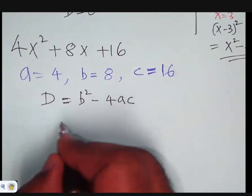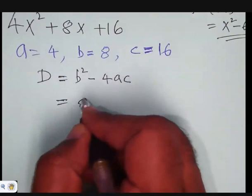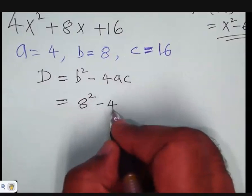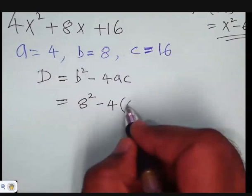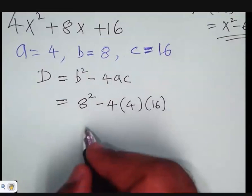Substitute your b, which is 8. So 8². Then minus 4 times a, that is 4, and c is 16. So find its value. 8²...